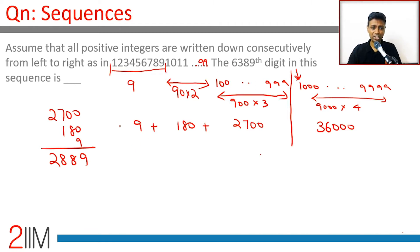Now after this we have to reach till the 6389th digit. How many digits here are being accommodated is nothing but 6389 minus 2889. Luckily enough 89 minus 89 is 00.